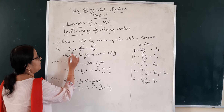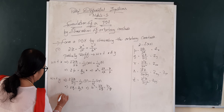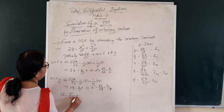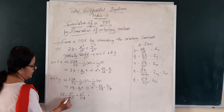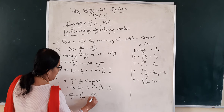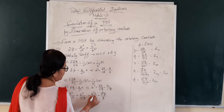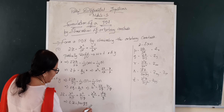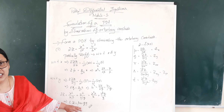Now substitute a square and b square values into the original equation. Substituting, we get 2z equals x square divided by a square, where a square is replaced by x by p, plus y square divided by b square, where b square is replaced by y by q. This equals x square times p by x plus y square times q by y. Cancelling one power from numerator and denominator, we get 2z equals px plus qy. We have no constants remaining.